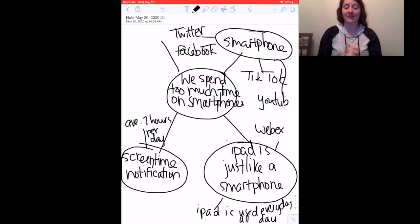So you'll see that I started with one idea: we spend too much time on smartphones. And from that, I started to create smaller ideas that go underneath that idea of we spend too much time on smartphones. I have the fact that my iPad is just like a smartphone and I'm on it all day. I talk about what I do on my smartphone every day. And I talk about my screen time notification and how many hours I have per day on average.